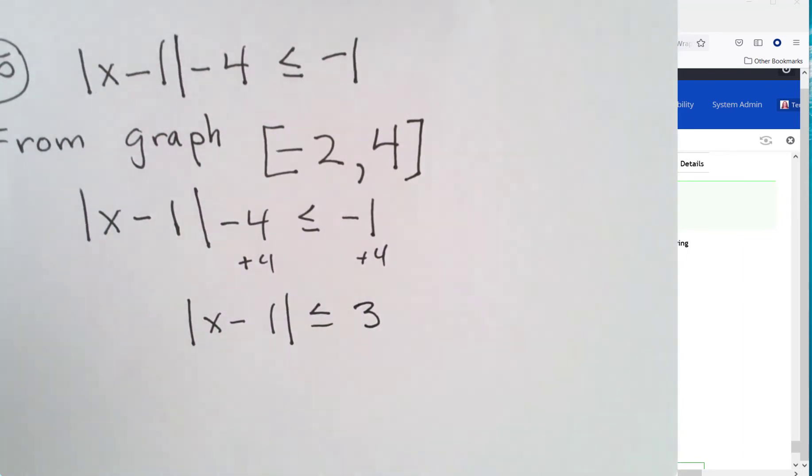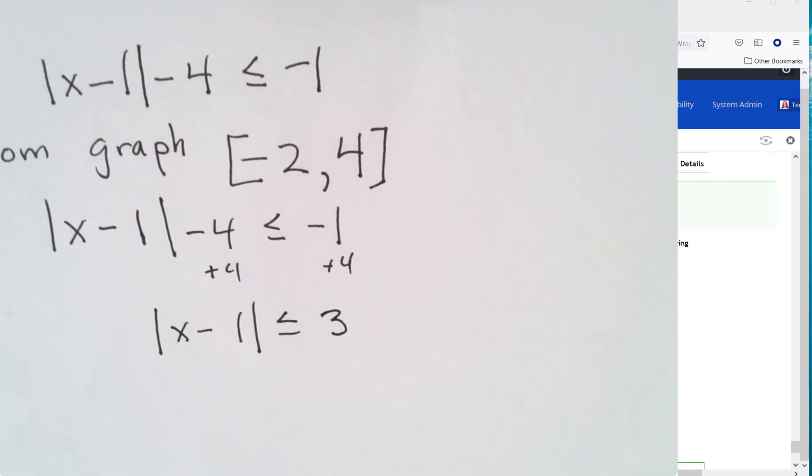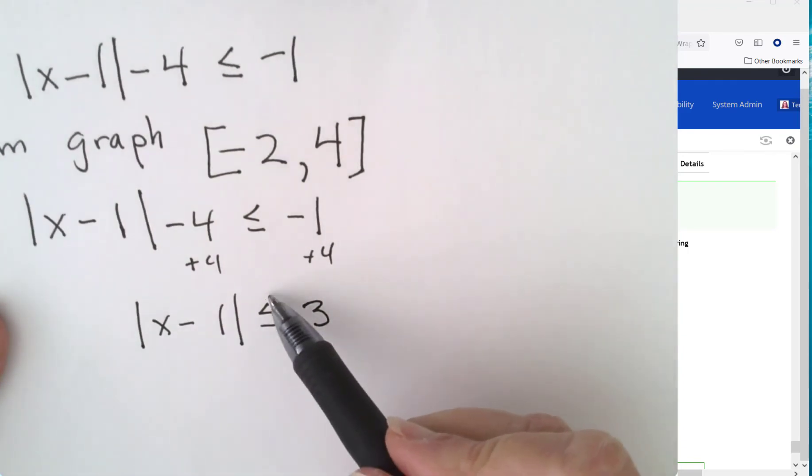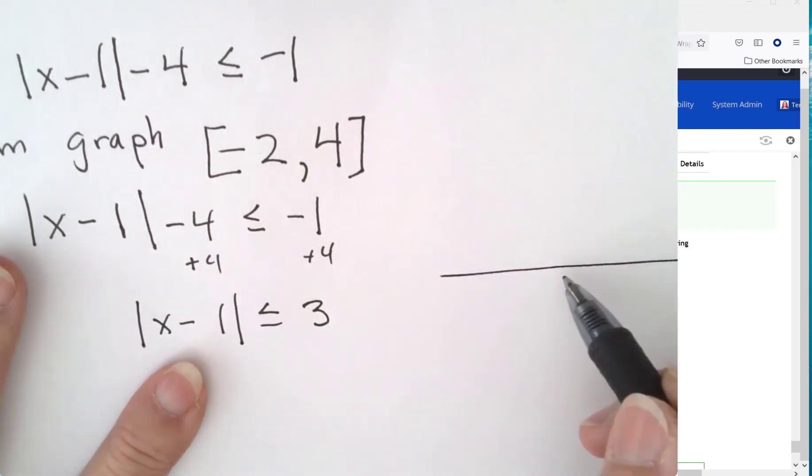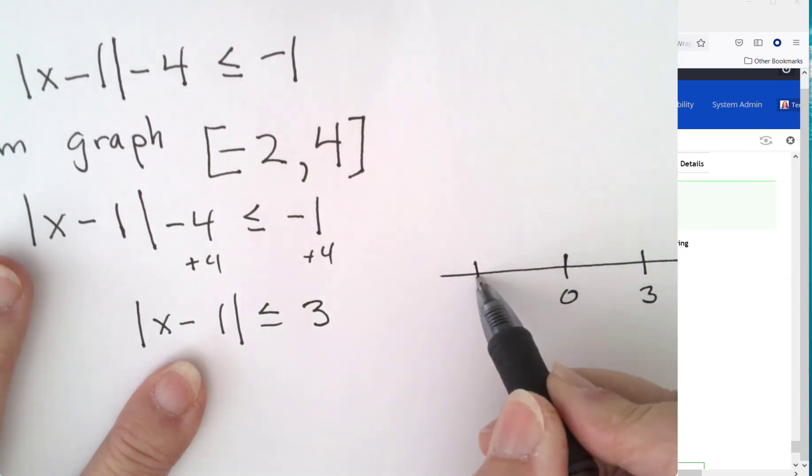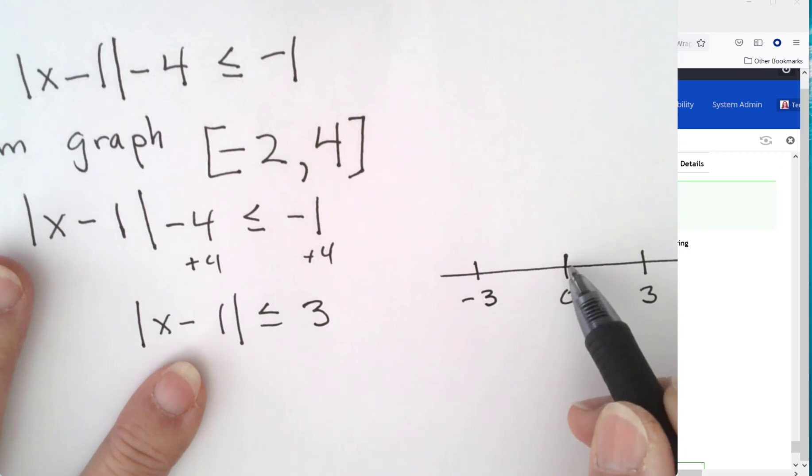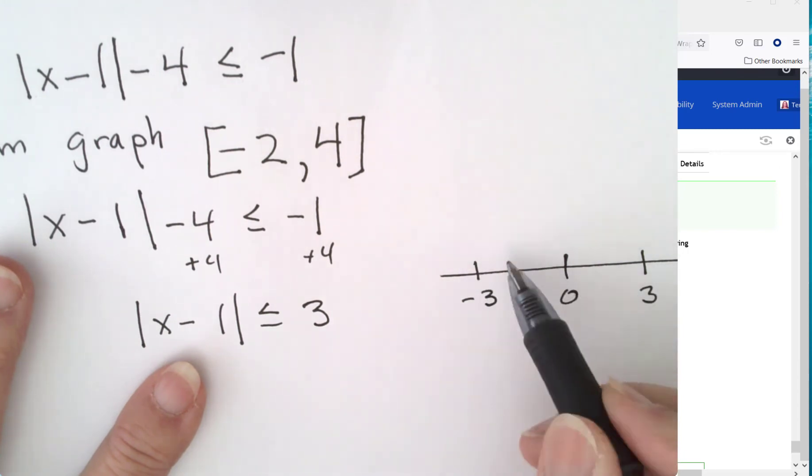And then you're ready to think about okay where is this. All right this one is less than. So whatever is in here is less than 3 spaces away from 0. So here is our 0. So 3 spaces would be here and negative 3. So it's going to be in between here.